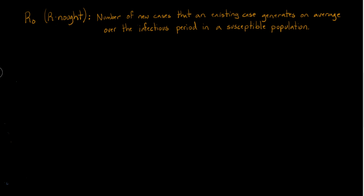So I have the definition of R-naught here, and I'm just going to take some quick notes. It says the number of new cases that an existing case generates on average, and it's over the infectious period in a susceptible population. And here, what they're referring to is a non-vaccinated population.